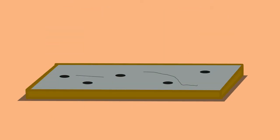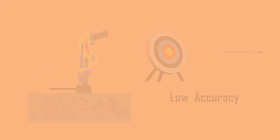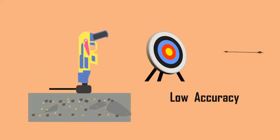The main disadvantage of this method is that it makes a hole and damages the structure, and the accuracy of the result is quite low compared to other testing methods.